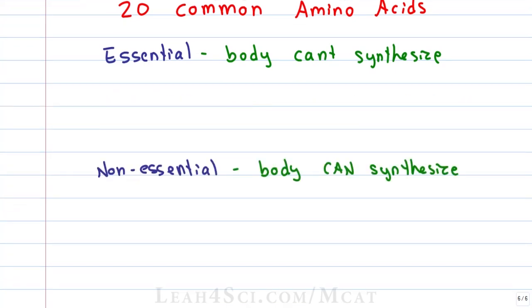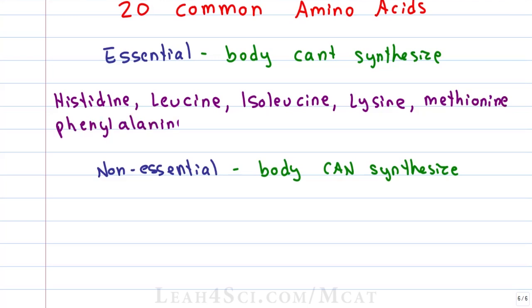You don't have to memorize this but the 9 essential amino acids are histidine, leucine, isoleucine, lysine, methionine, phenylalanine, threonine, tryptophan and valine.